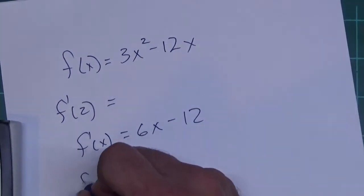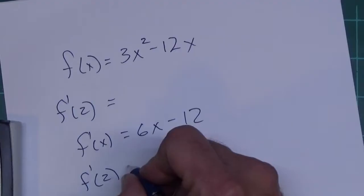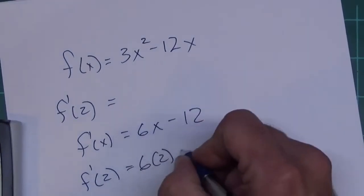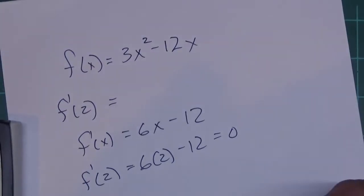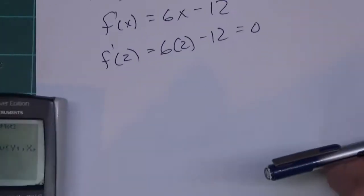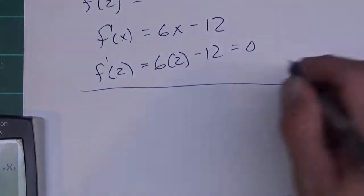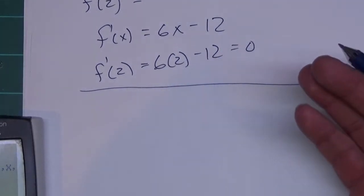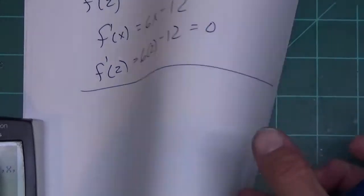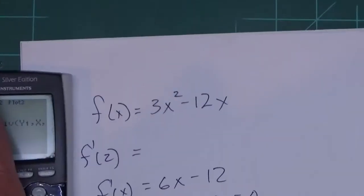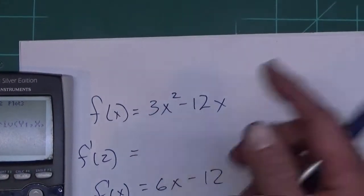You would bring the 2 down, multiply by the front, so you get 6x, subtract 1 which leaves it as 2 minus, and the derivative of 12x is 12. Then you could come in here and plug 2 in, so you have 6 times 2 minus 12, and that comes up with 0. Okay, so doing it by hand isn't that hard, that's not the point here. What if your teacher puts some really ugly equation in and wants you to find it?